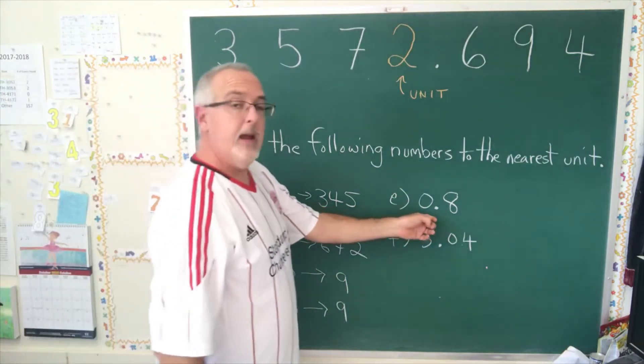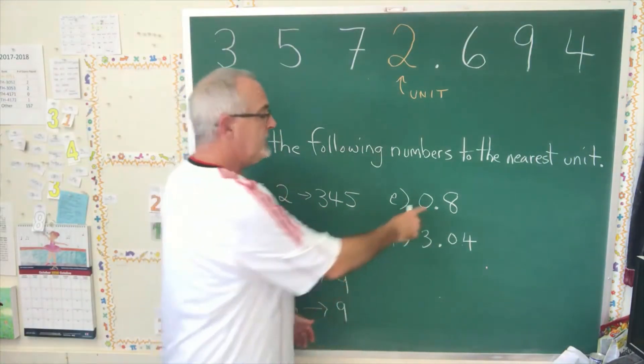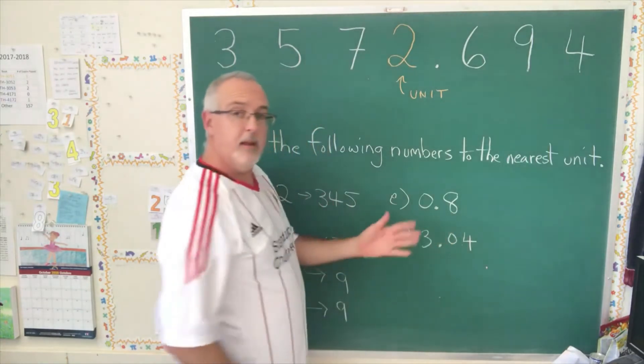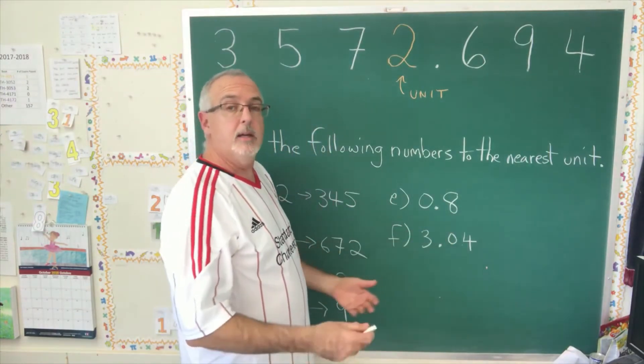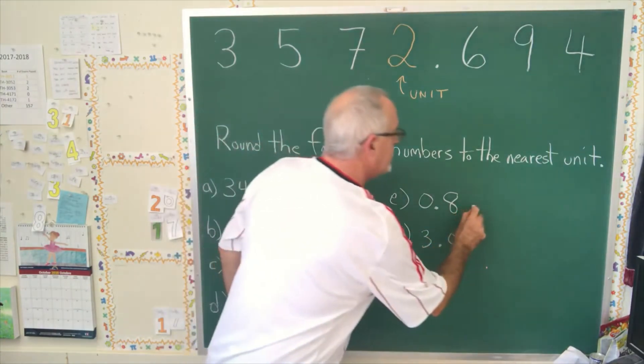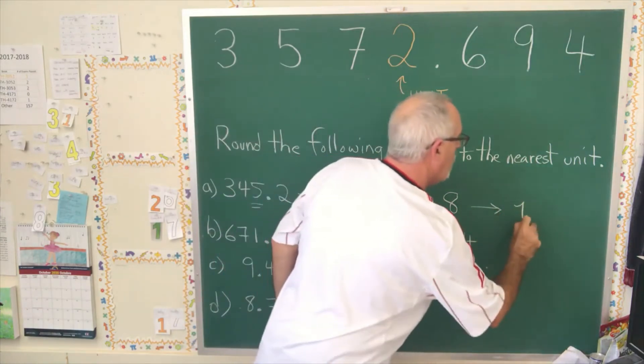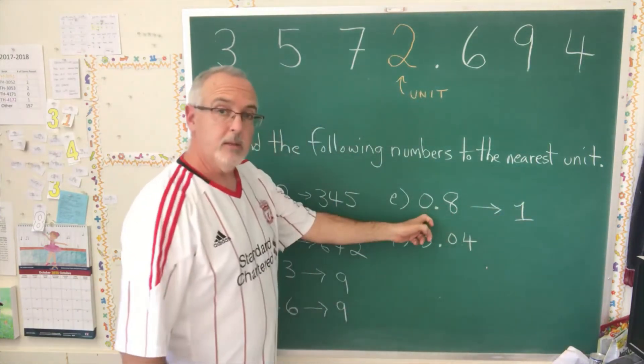0.8, we have a 0 in the unit position. But since the number after the decimal in the 10th position is an 8, it's bigger than 4. That means we will round this up to 1. The 0 gets bumped up to a 1.